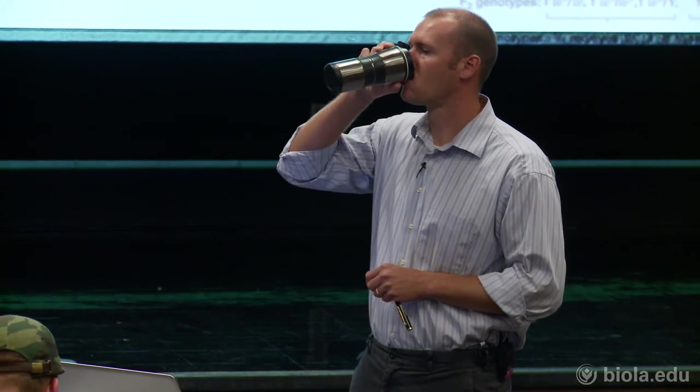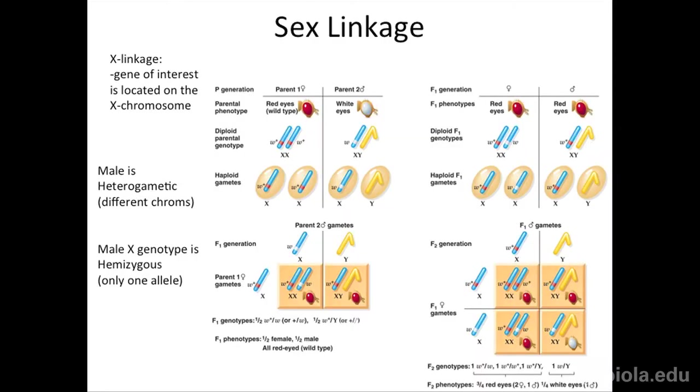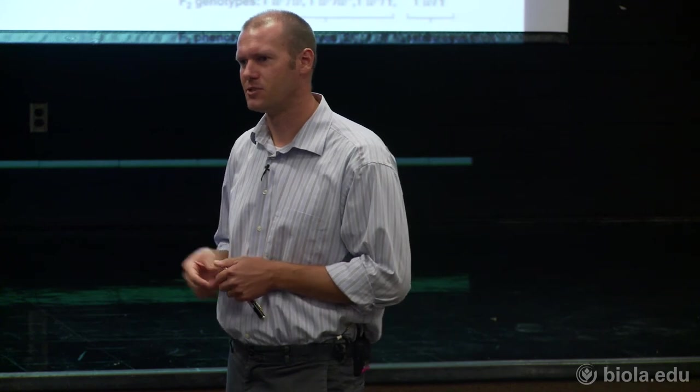Student question about whether the X chromosome always determines the phenotype: in X linkage, yes, it's always the X that determines the phenotype. This holds because it's a recessive trait — males have a 50-50 chance of being white-eyed, females are always red because even if they inherit a white allele it's recessive. You could have X-linked dominant traits, which would show different ratios. This is recessive X-linkage. Most mutations we think about are recessive.